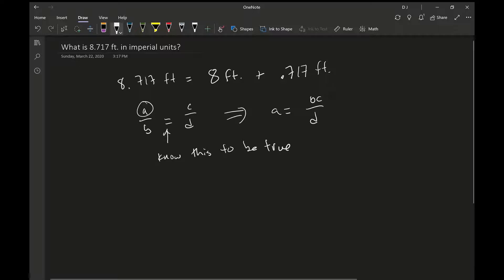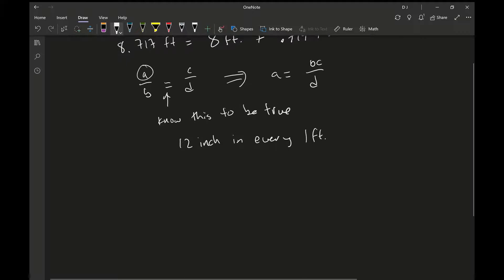The ratio that I want to know: we know that there are 12 inches in every foot. And so then we know that if there's 0.717 feet and we want to know how many inches that is, let's call it a, and we want to figure out in inches 0.717 feet.